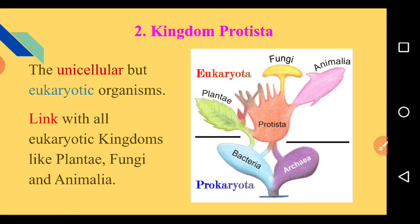Kingdom Protista serves as a link with all eukaryotic kingdoms — Kingdom Plantae, Kingdom Fungi, and Kingdom Animalia. This kingdom is further divided into five groups according to the evolution or nature of the organisms.